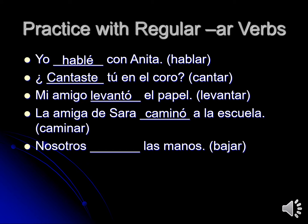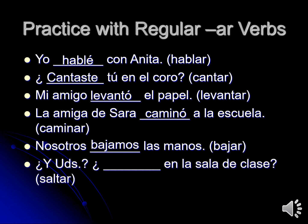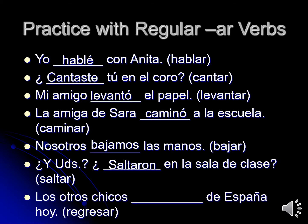In the preterite tense, the nosotros ending for AR verbs is AMOS. So for the regular verb bajar, we would have nosotros bajamos las manos, and we would just have to tell from the context whether we meant 'we lower our hands' or 'we lowered our hands.' The third person plural ending is ARON. You use that with ellos, ellas, or ustedes. With the regular verb saltar, we would have ustedes saltaron en la sala de clase — did y'all jump in the classroom? With los otros chicos, it would be the same ending because it would be 'they.' So with the regular verb regresar, we would use regresaron: los otros chicos regresaron de España hoy — the other kids came back from Spain today.